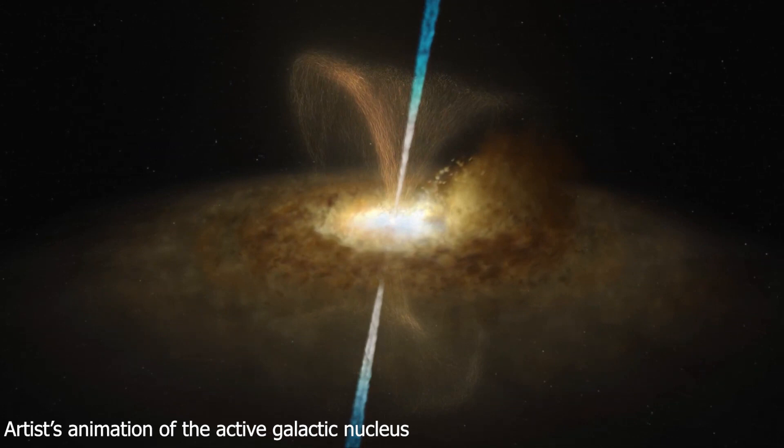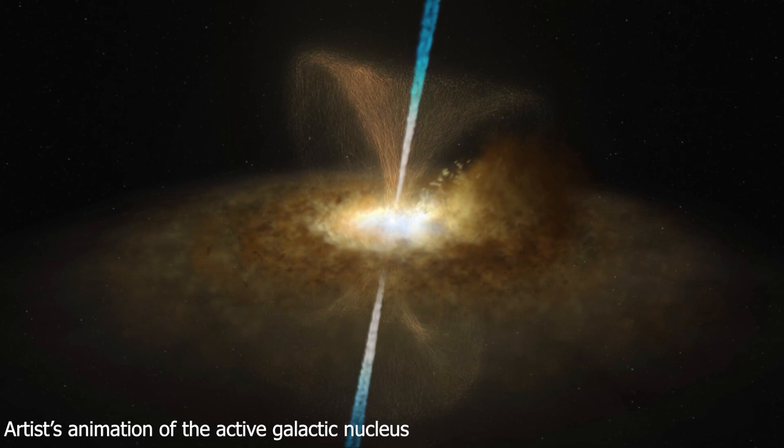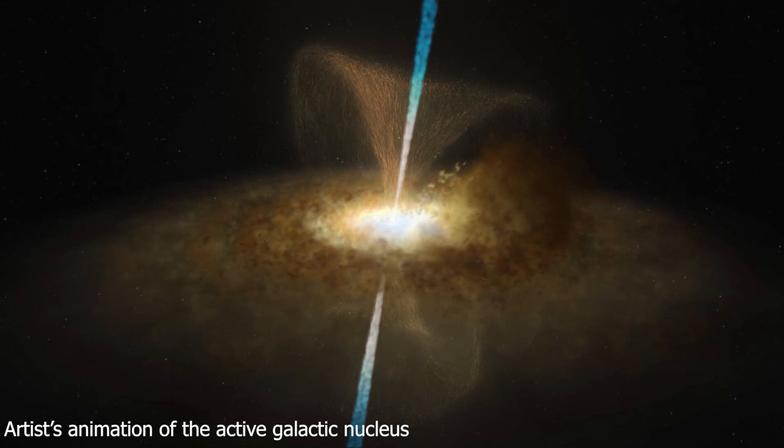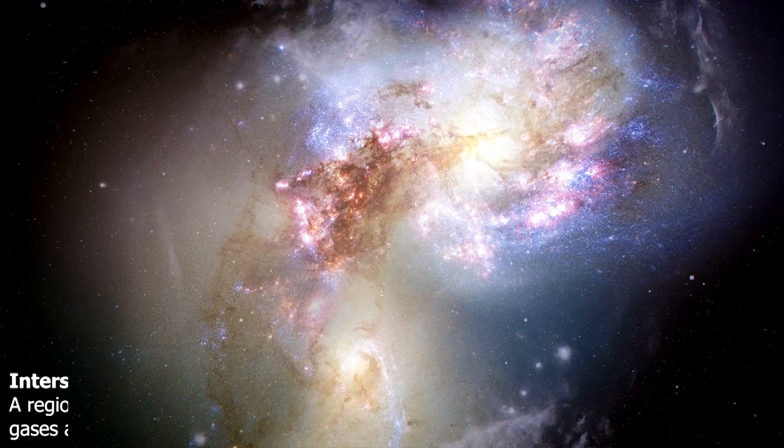With Webb, scientists can finally investigate the gas and dust between the galaxy's central AGN and the starburst ring. The GOALS team has found many new bits of data about NGC 7469 by obtaining photos and spectra of the object using Webb's MIRI, NIRCAM, and NIRSPEC instruments.